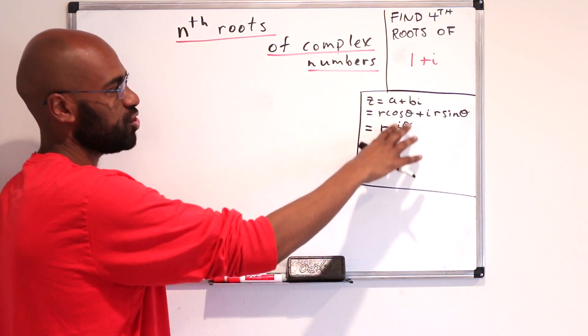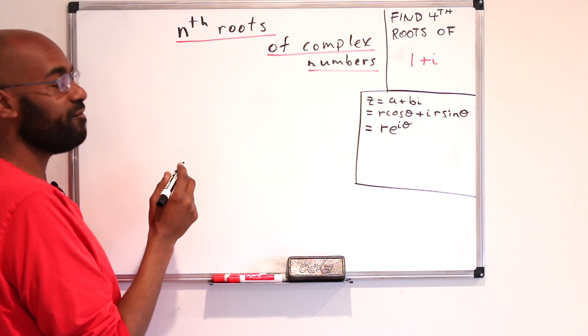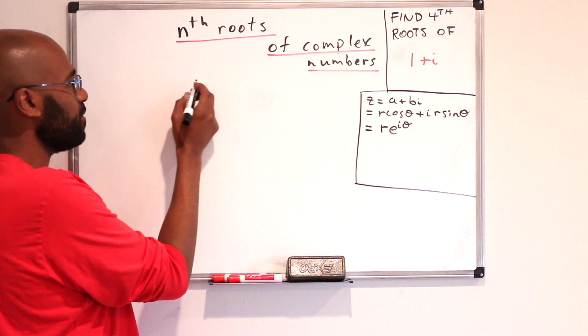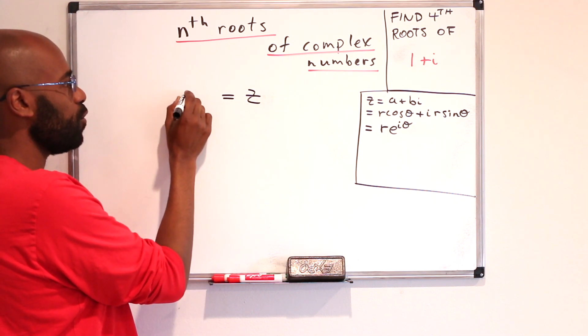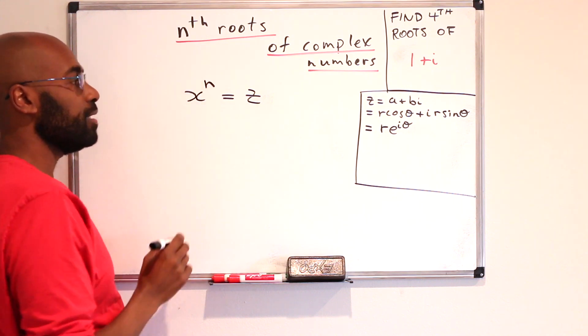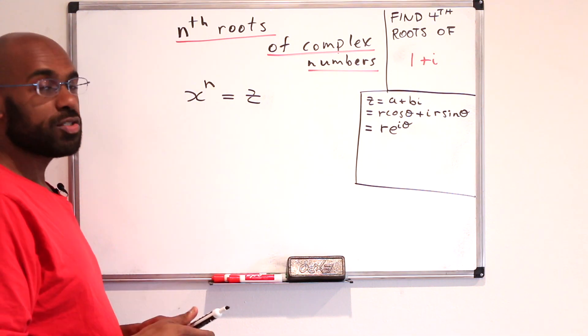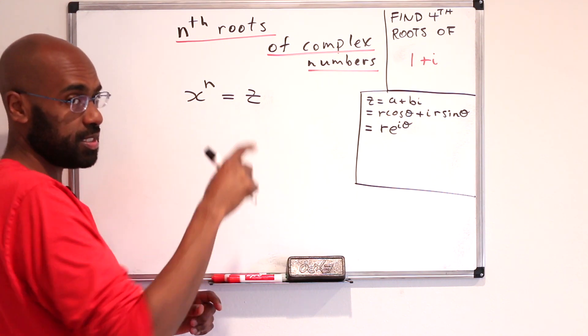I've placed the different representations of a complex number right over here. Now let's think about the question of finding the nth roots of a complex number. So, say we have a complex number z, and we're interested in solving the equation x to the n equals z, where n is a fixed positive integer.